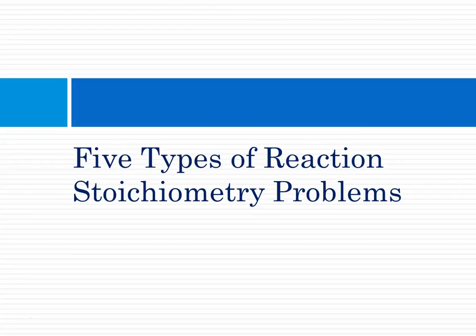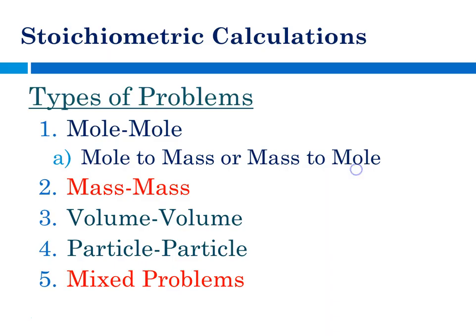So remember, there are five types of stoichiometry problems that we encounter, and today we're going to be looking at mass-to-mass and mixed calculations.